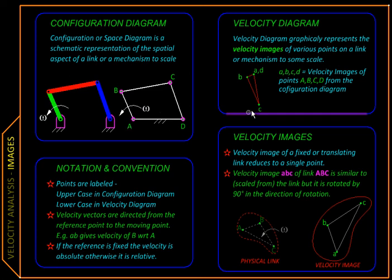From the space diagram, we can start plotting the velocities, either absolute or relative for various points, and this diagram is called the velocity diagram. The two are of course related.